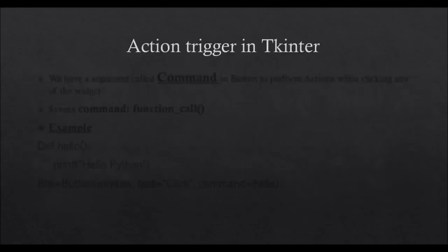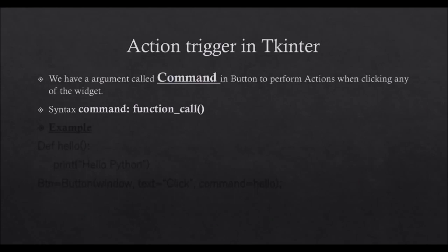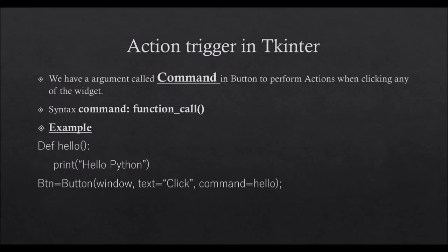Now, the action trigger in Tkinter. An action trigger is to perform some action after clicking any widget. We have an argument called command in Button to perform an action when clicking a widget. Syntax: command equals function call. After clicking the widget, the particular function will be called. For example, after clicking the command 'hello', it will display 'hello python'.